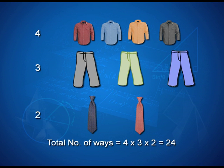Looking back, what we have is a possibility of 4 different shirts, 3 pants and 2 ties. How many ways does he get dressed up? For each shirt there are 6 ways, which was 3 into 2. So with 4 shirts, 3 pants and 2 ties, the total number of ways a person can dress up will become 4 into 3 into 2, which is same as 24.